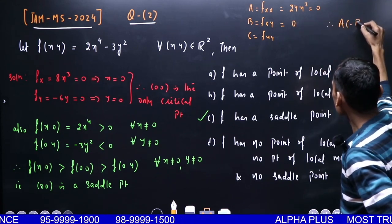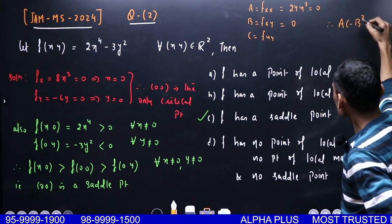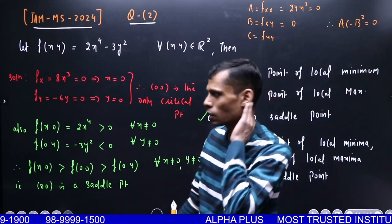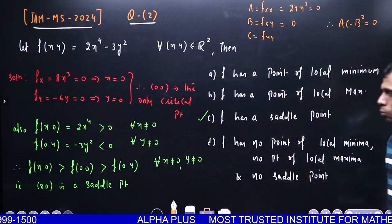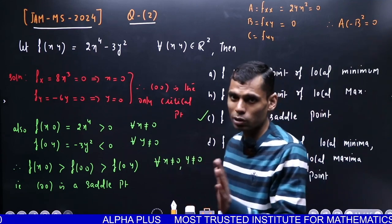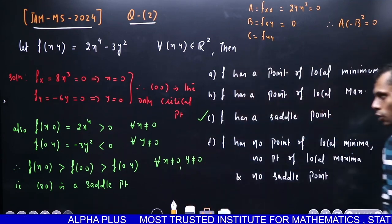AC minus B² gives 0. When this is 0, you need further investigation, which we've already done. This should be clear to you. This was an excellent question with a beautiful solution. Please leave a good comment. Saddle point. Thank you. Next question.